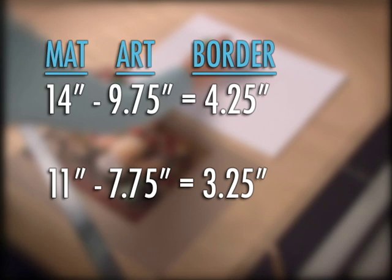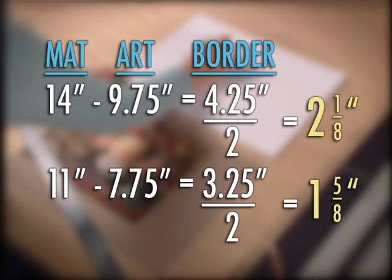Subtract the artwork size from the frame size and divide that by two. This calculation will determine the left and right and top and bottom border sizes.